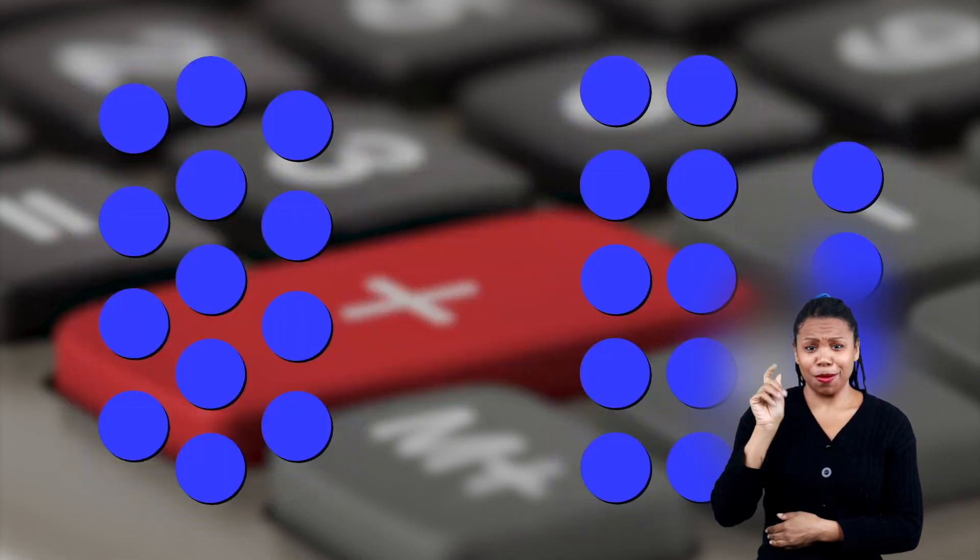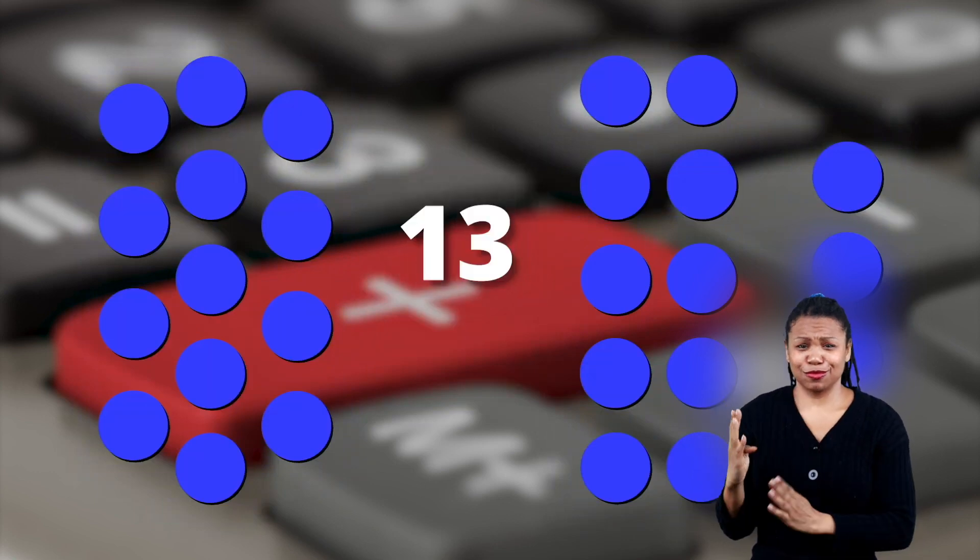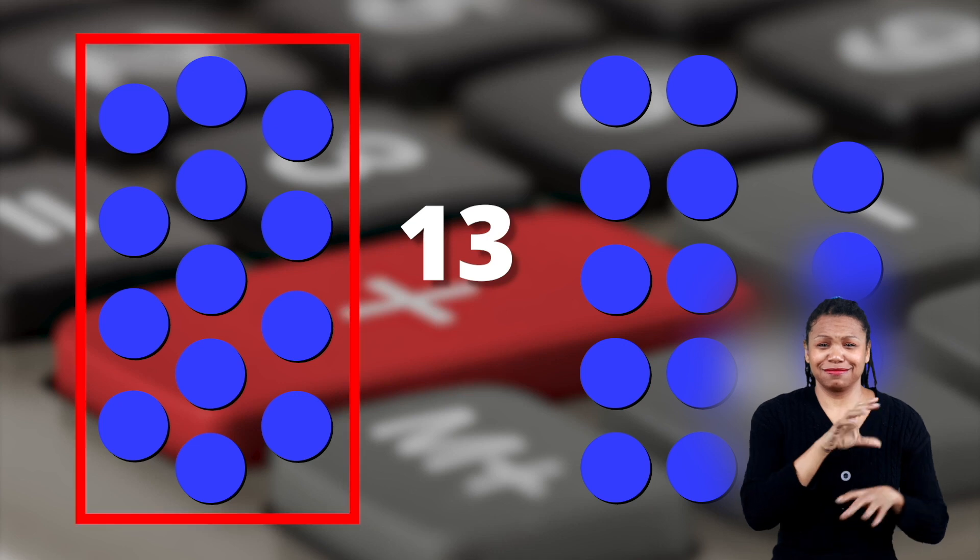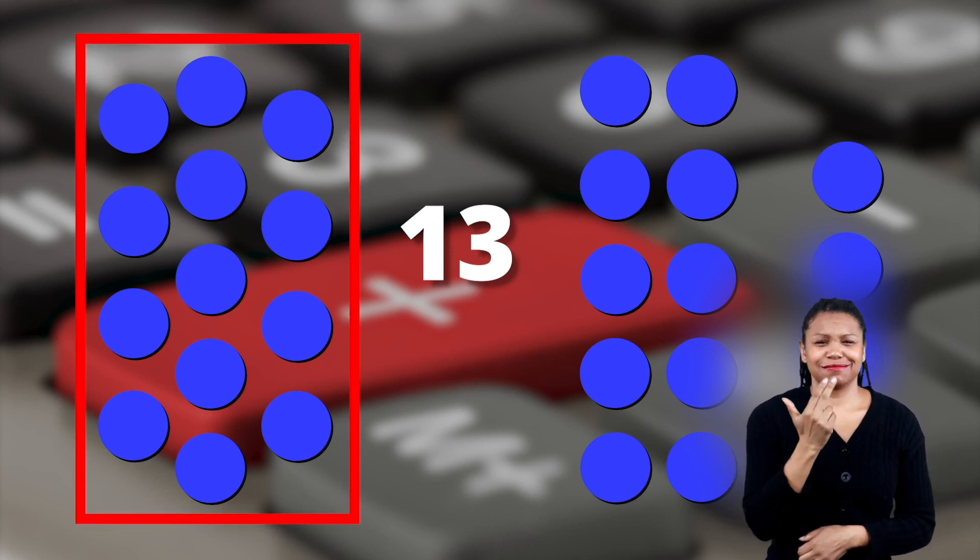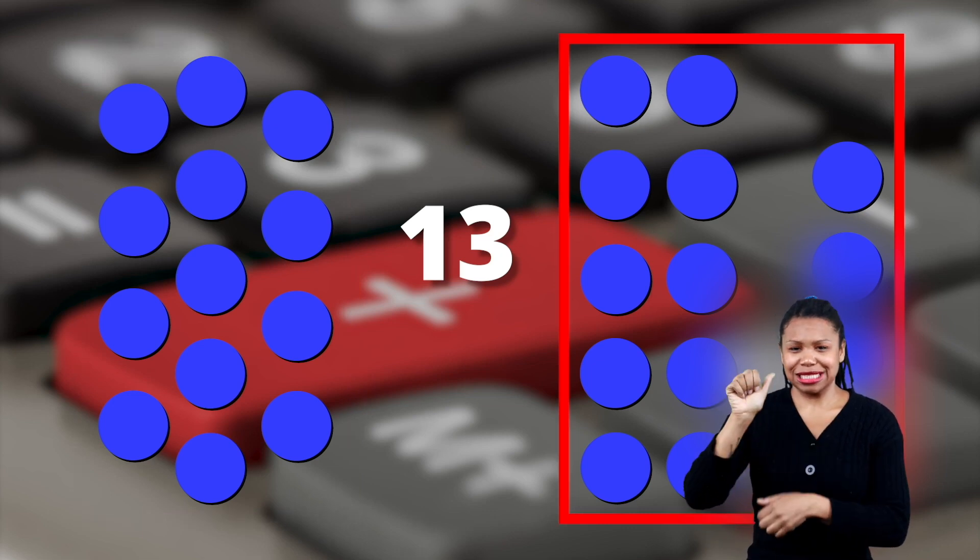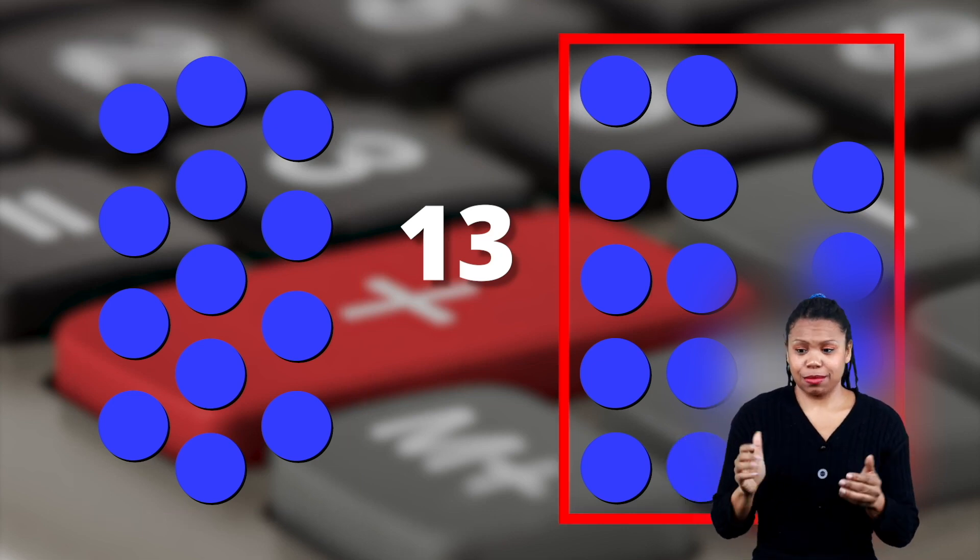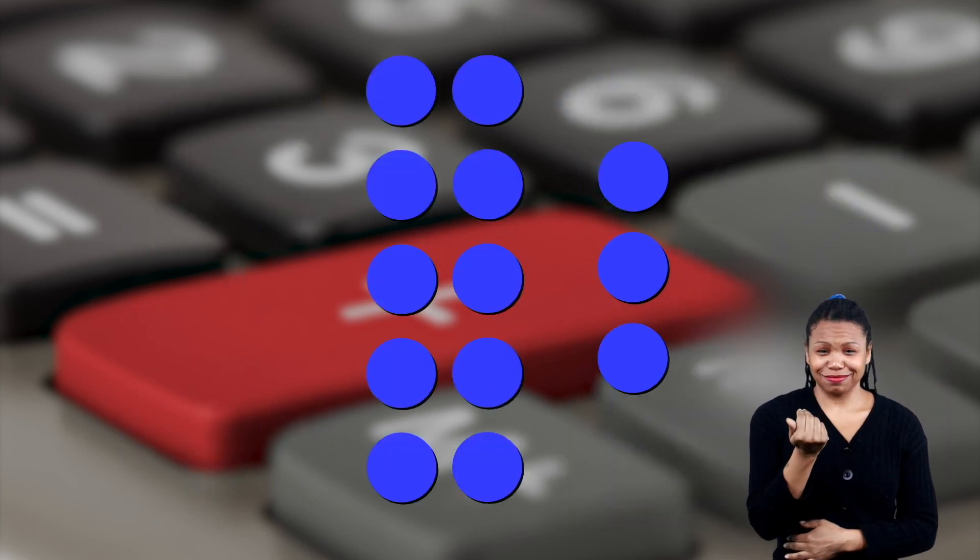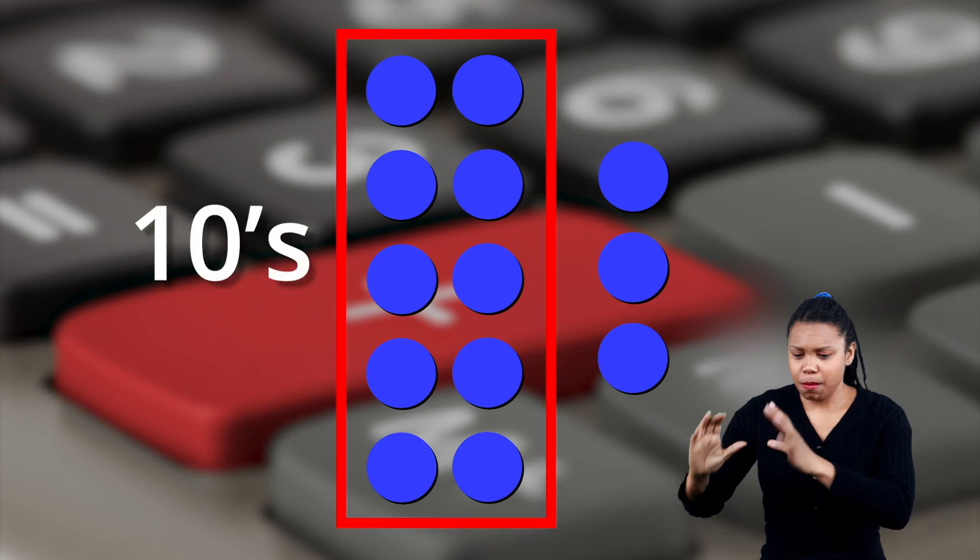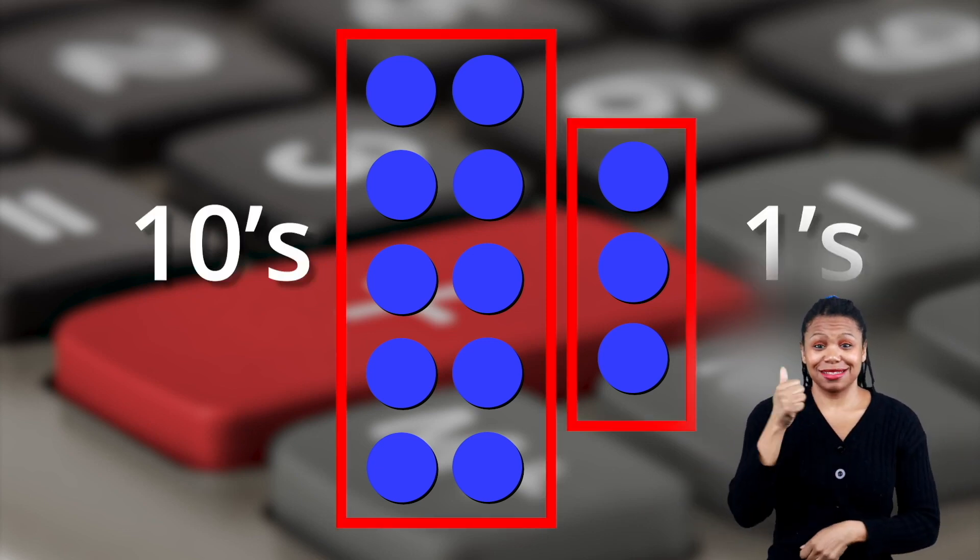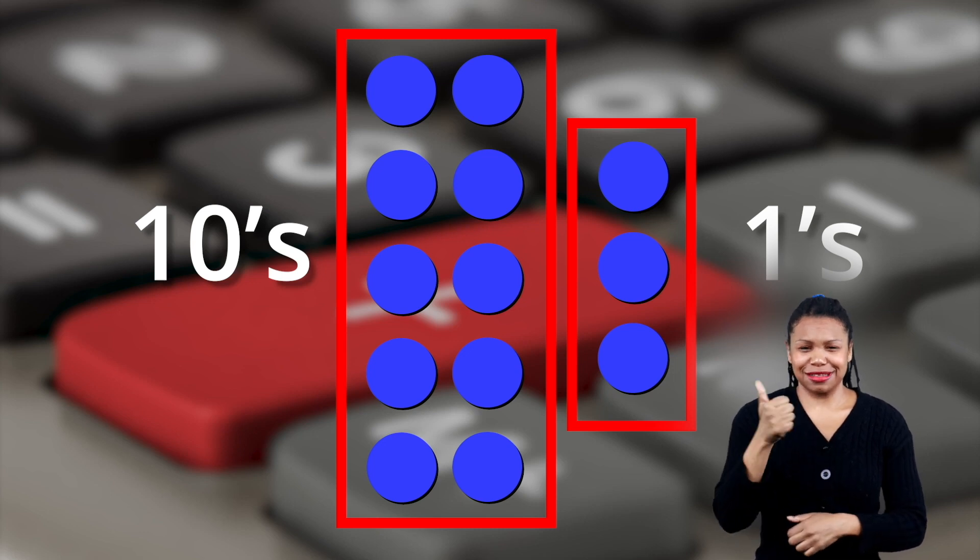Take a look at these dots. This is the number thirteen represented in two different ways. On the left is the number thirteen represented as thirteen single dots. And on the right is the number thirteen represented as a group of ten dots and a separate group of three dots. In the second example, you've regrouped the number thirteen, meaning you've broken it down into the tens place and the ones place. There is one group of ten dots in the tens place, and three single dots in the ones place.